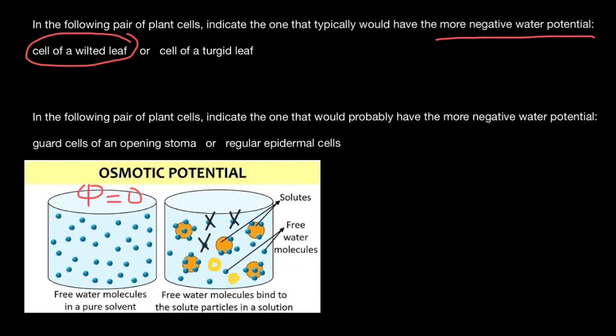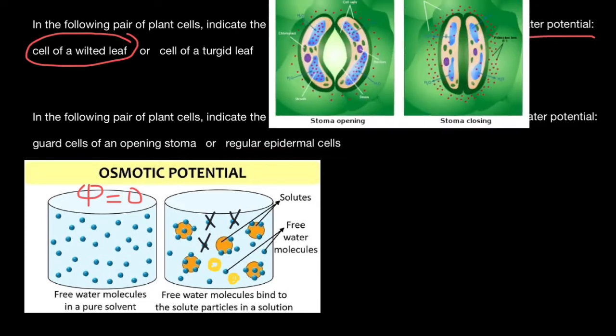Now let's move to the second question. In the following pair of plant cells, indicate the one that would probably have the more negative water potential: guard cells of an opening stoma or regular epidermal cells. Again, I have a picture for you.